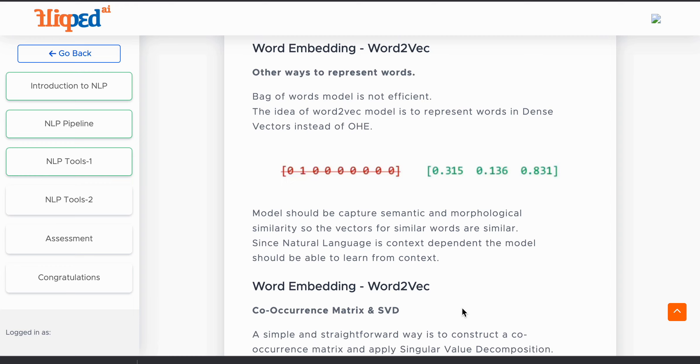This Word2Vec model represents words in dense vectors instead of one-hot encoding. The model should be able to capture semantic and morphological similarity so the vectors for similar words are similar. Since we deal with context of natural language processing, the model should be able to learn from context.